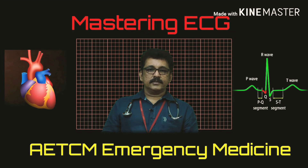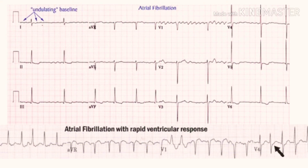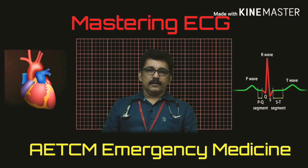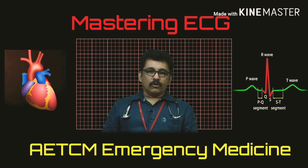In this ECG, the lower part shows a rapid heartbeat with irregularly irregular QRS complexes — that is atrial fibrillation with rapid ventricular rate. The upper part shows controlled rate atrial fibrillation with irregular but controlled QRS complexes. Atrial fibrillation can be diagnosed as irregular narrow complex QRS tachycardia.